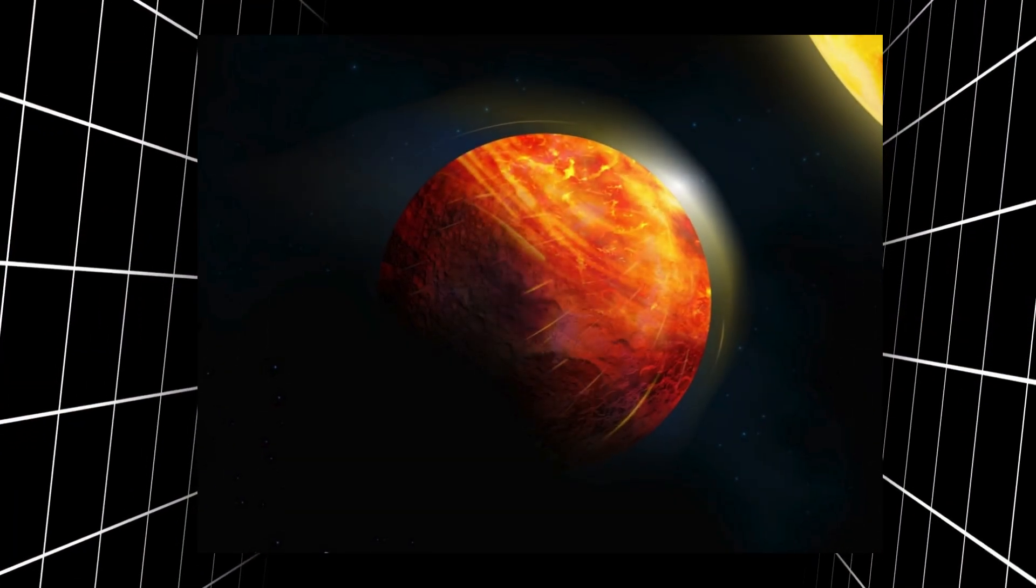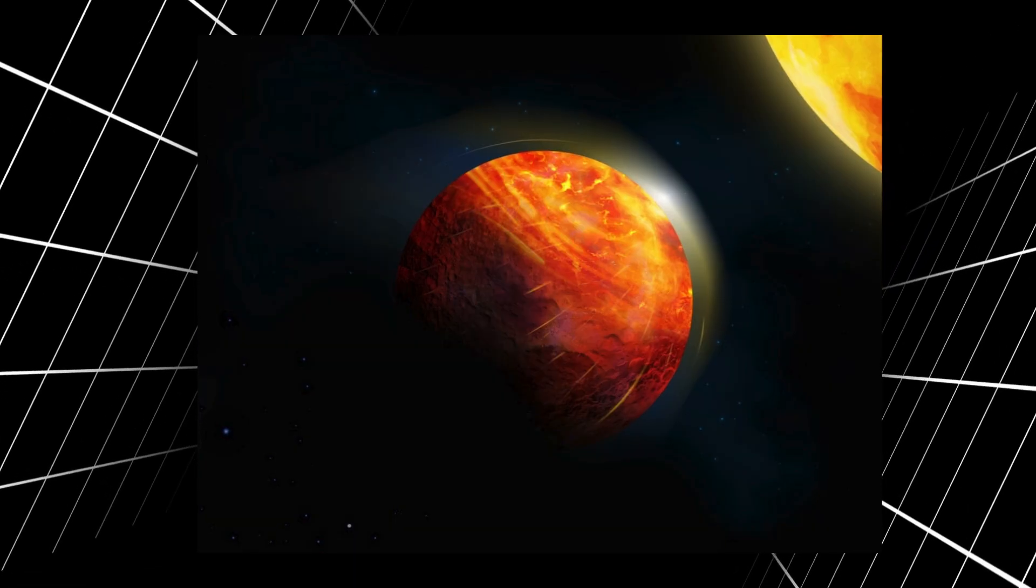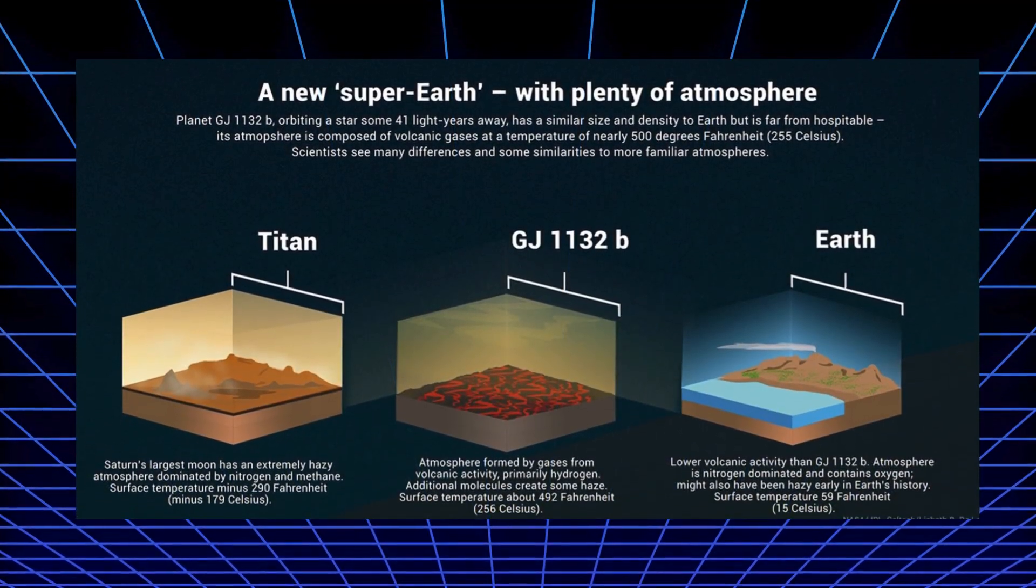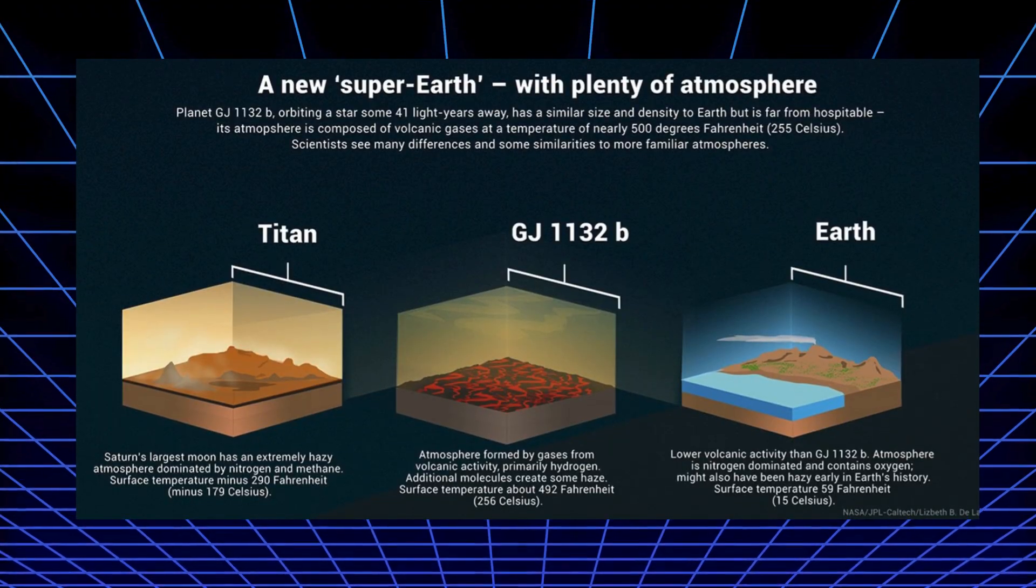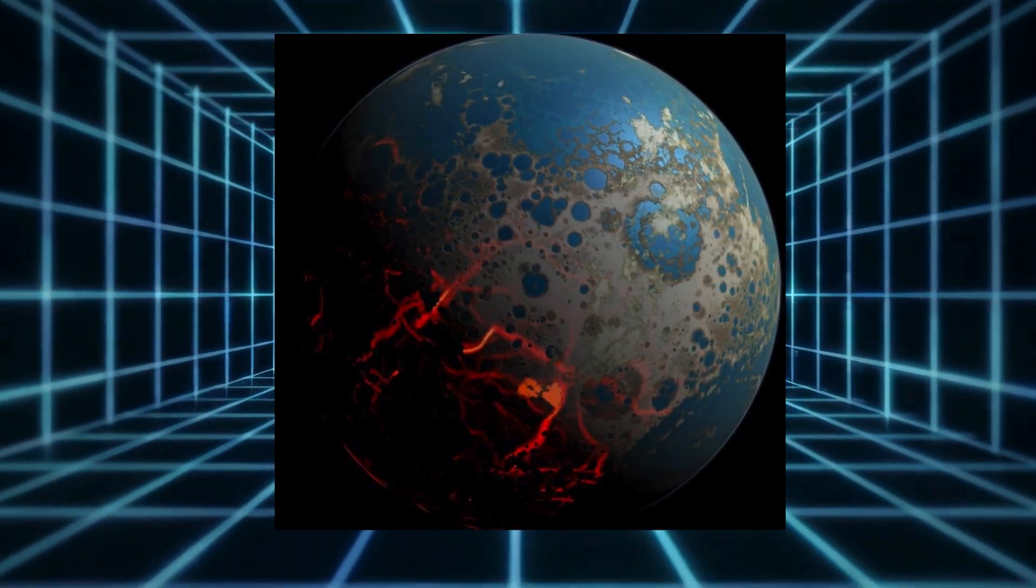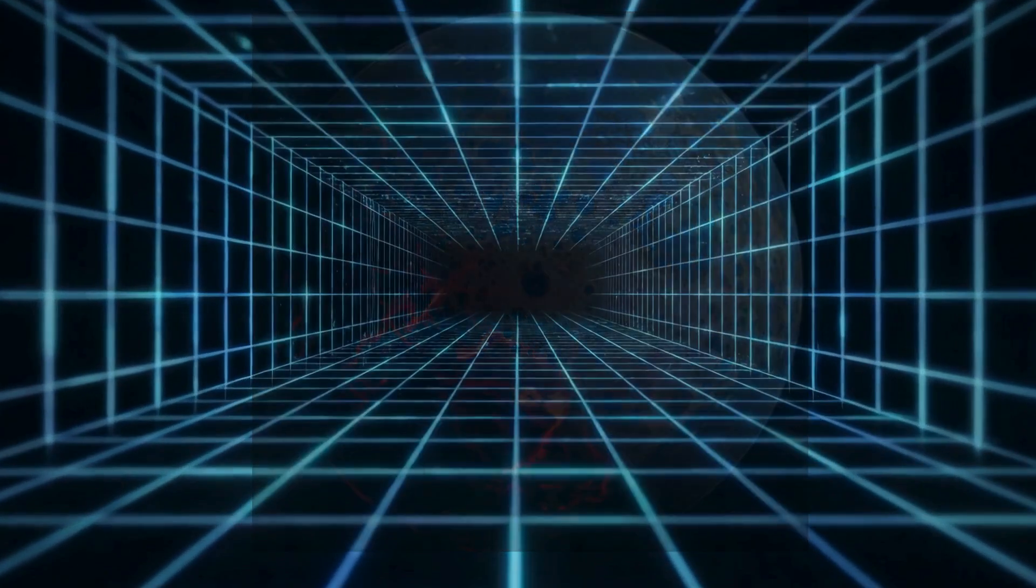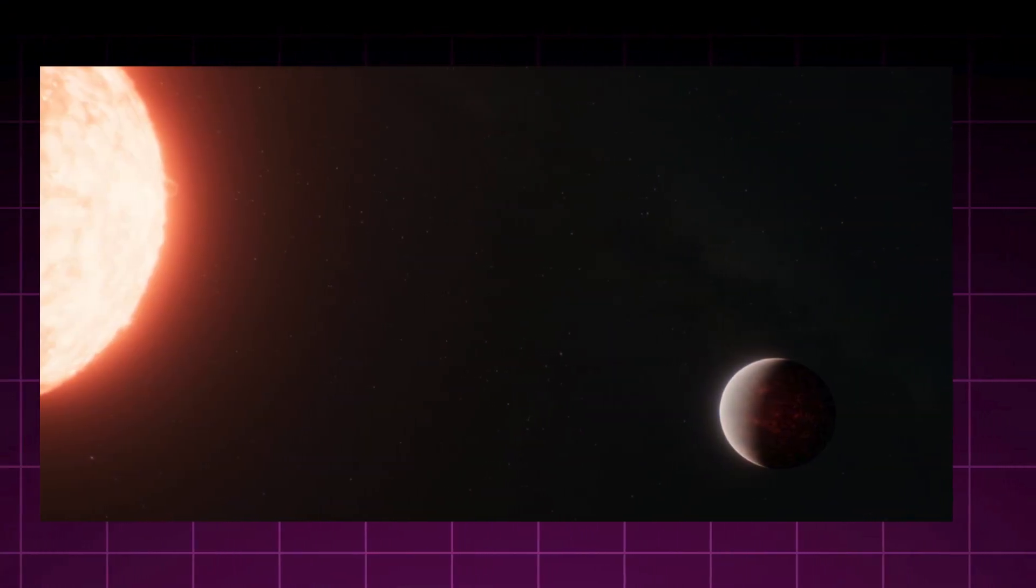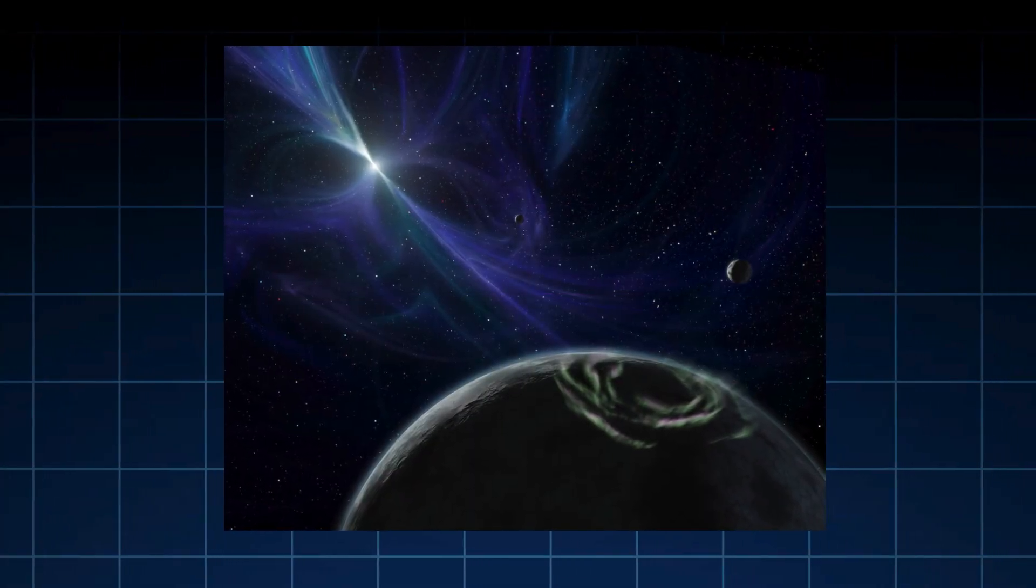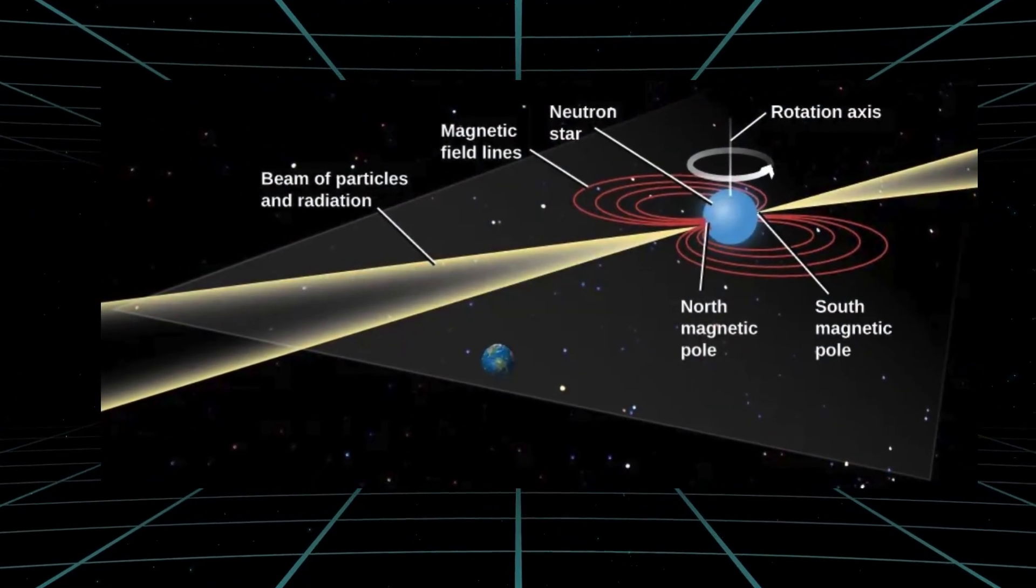One of the first fractures in our assumptions emerges from a world that should have been stripped bare long ago. TOI-561b is a super-Earth scorched by its star at temperatures hot enough to melt rock into vast magma oceans. Models predicted that any atmosphere would boil away under such relentless radiation, leaving only a naked core. Yet Webb's precise measurements show something astonishing.